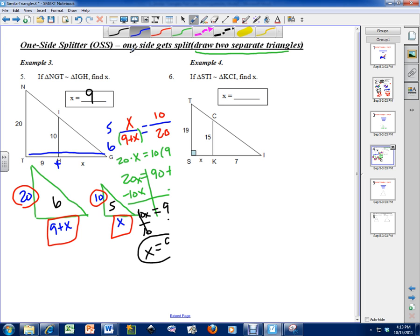But I'm going to clear this side up so I have space to work on this problem here. So again, this is a one side splitter. One side is getting split. So I'm going to draw two separate triangles. I've got a small triangle. And I'm going to have a big triangle. Hopefully this is going to be better. So the dimensions on the small triangle are 15 and 7.